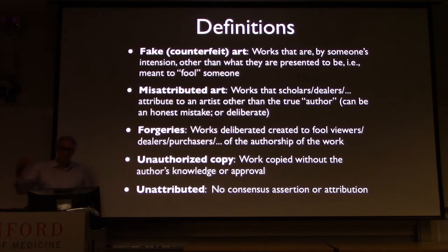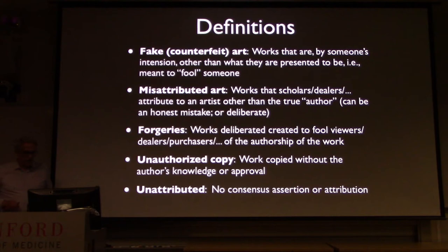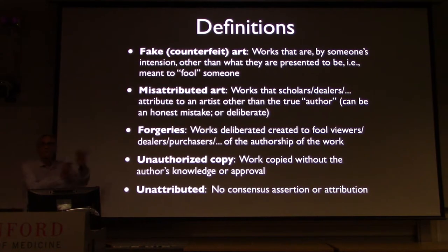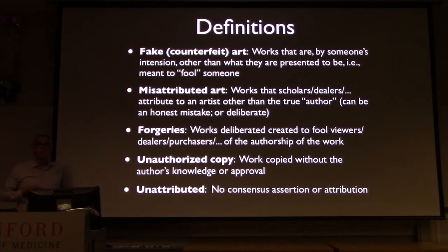There are also unauthorized copies — works that are copied without the author's knowledge or approval. And then unattributed works: paintings where there's no consensus assertion or attribution. We just don't know, and you'll go to museums, especially for ancient art, and we don't know who the artist was. I'm only going to talk about paintings, no sculpture today.